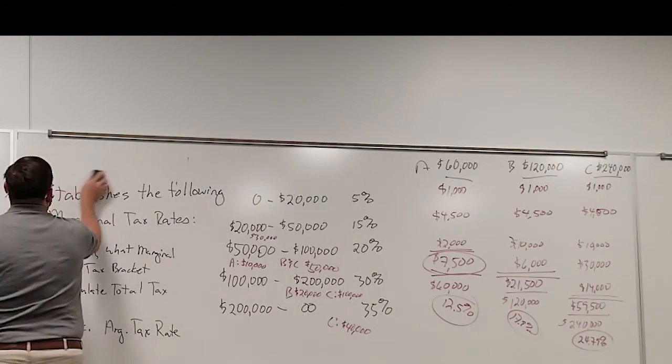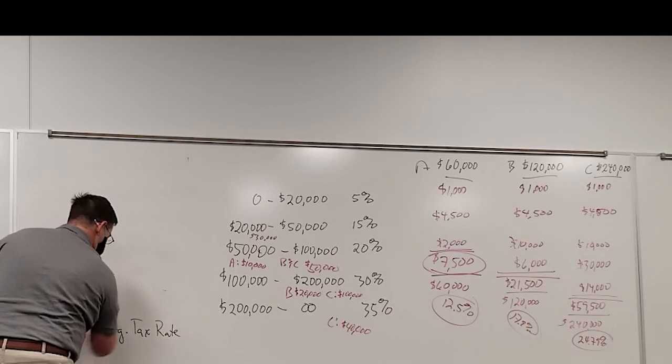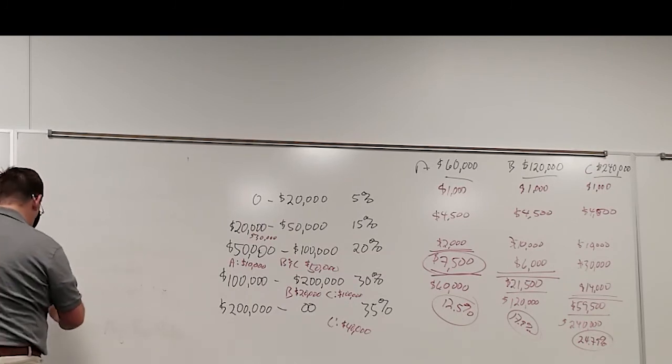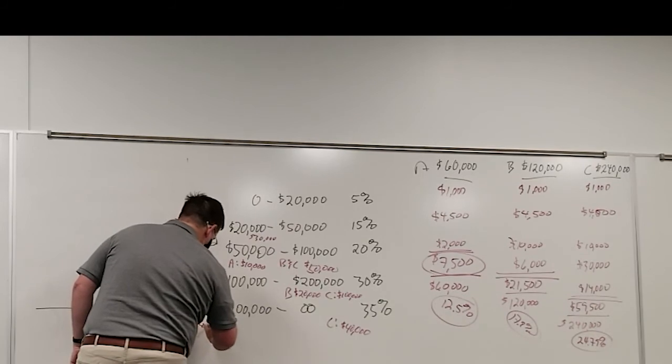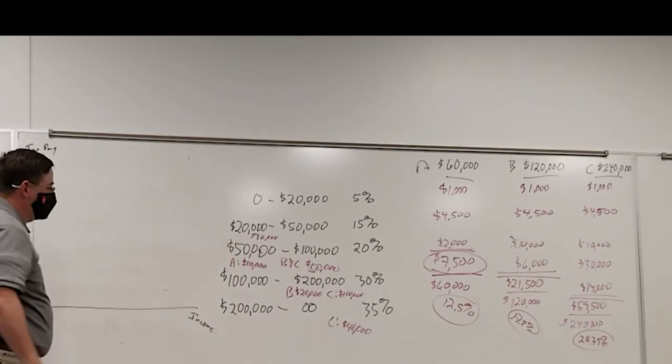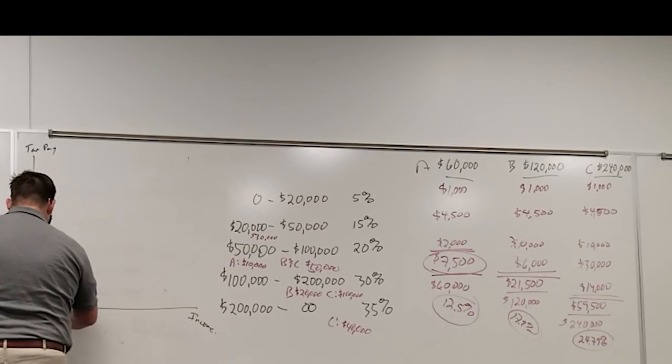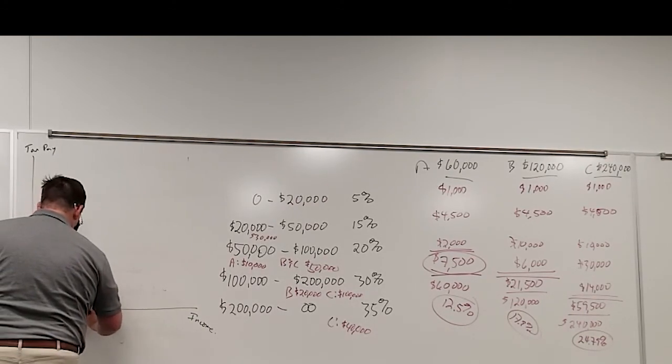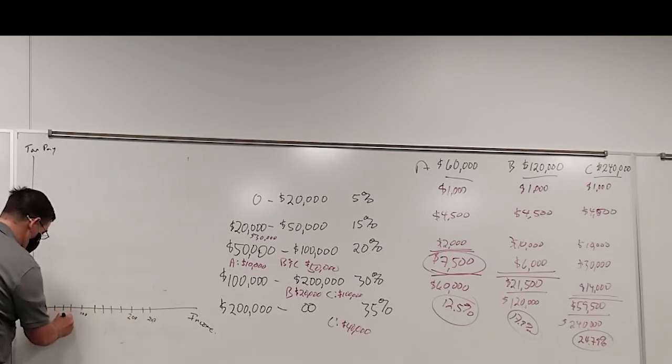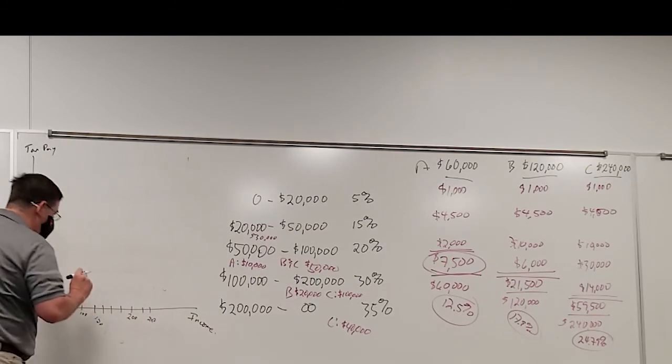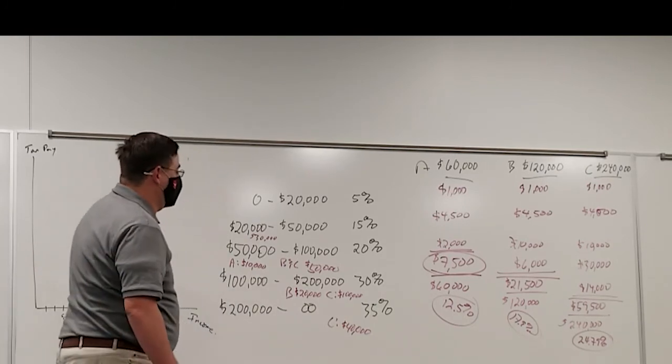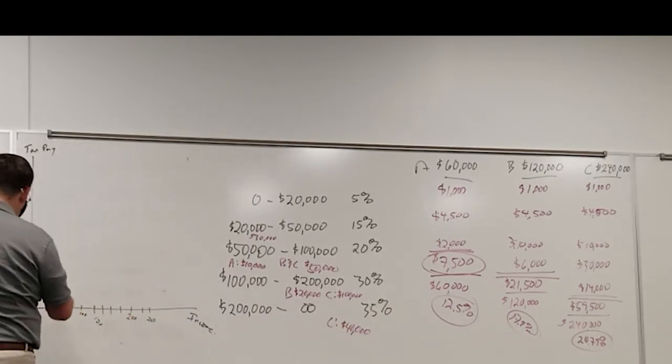Let's do a little more analysis of this. Consider that this is your income, and this is the tax that you pay. So I want to go 20, 40, 60, 80, 100, 120, 140, 160, 180, 200, 220, 240. And then the total amount of tax paid varies between up to 60,000. So I got to make this into 60.